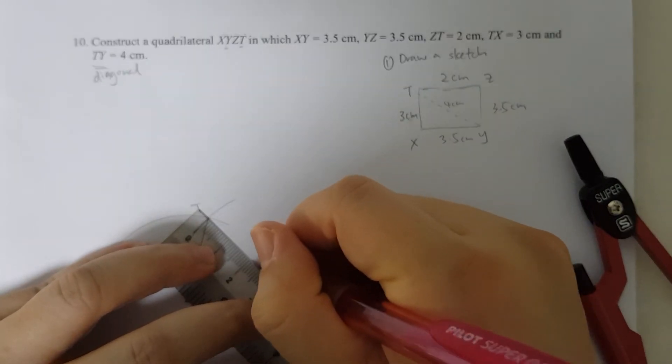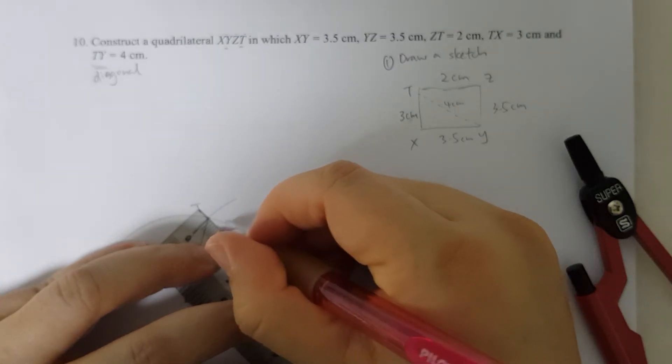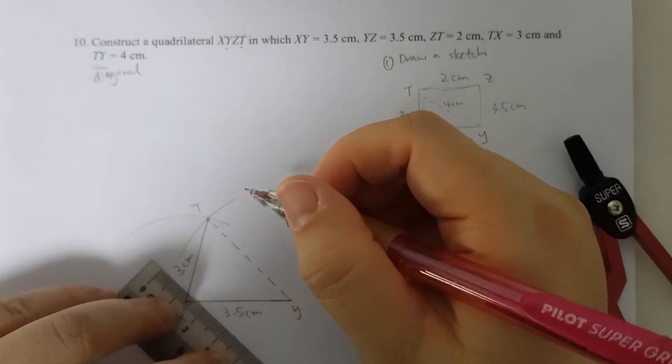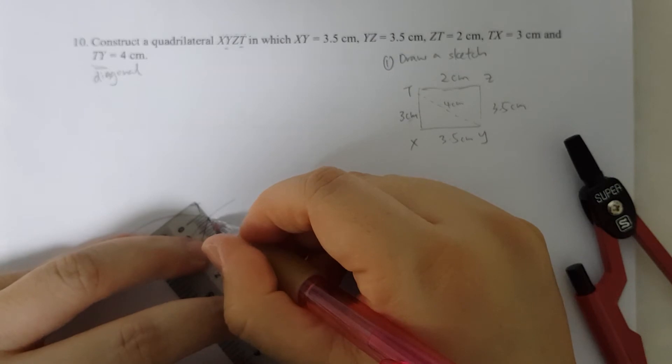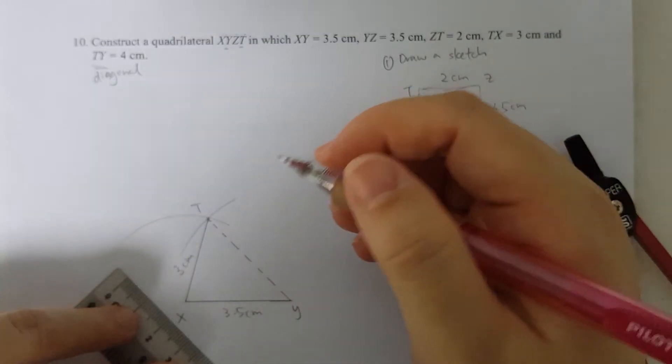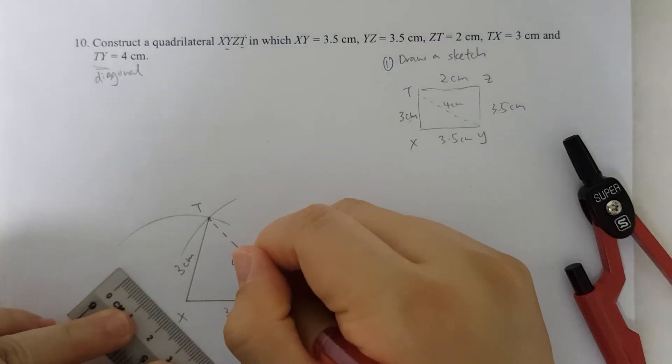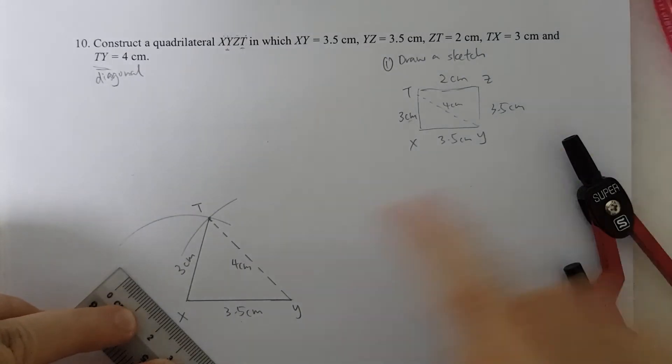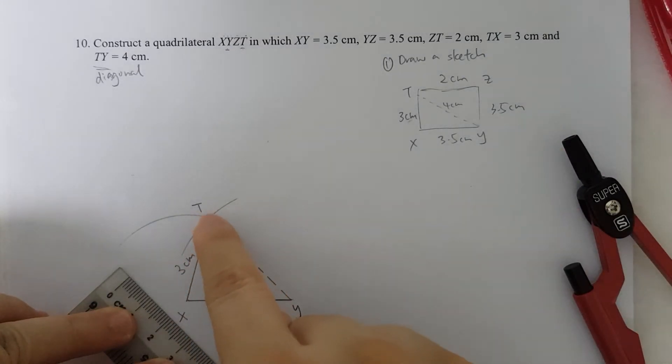Which is 4cm. Now since TY is a diagonal, I will just represent it by drawing the dashed lines. So now that I have the third point, I can use T and Y to actually give me point Z.